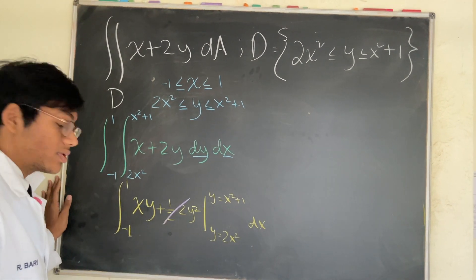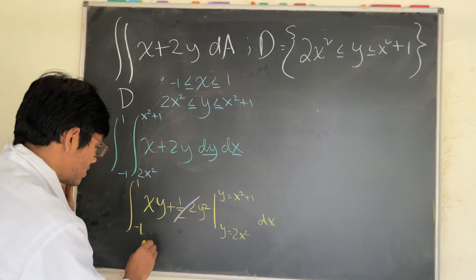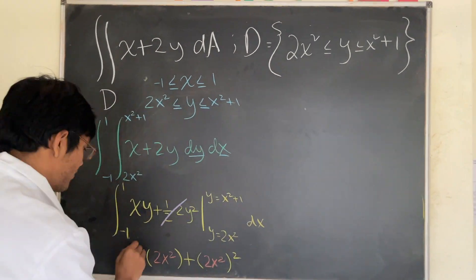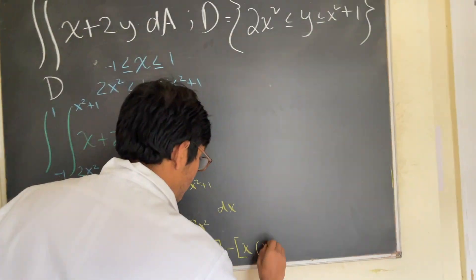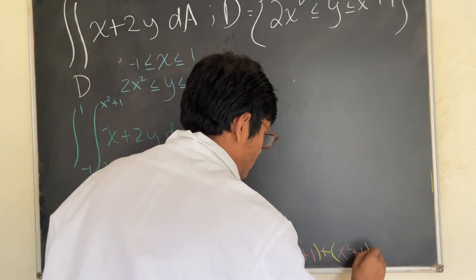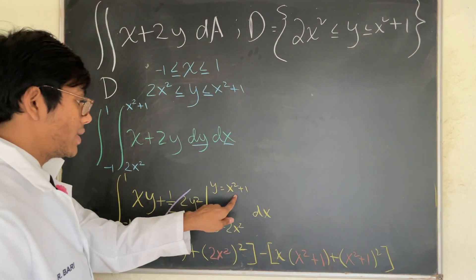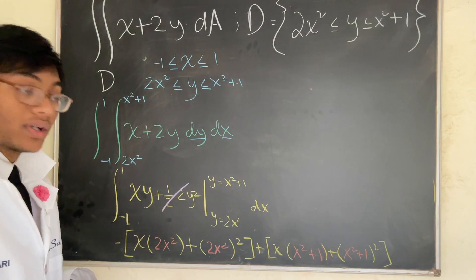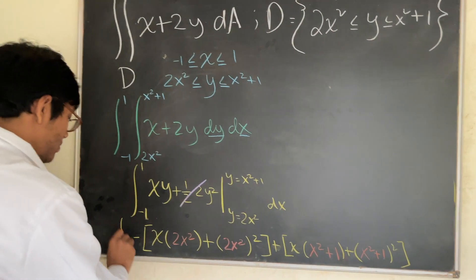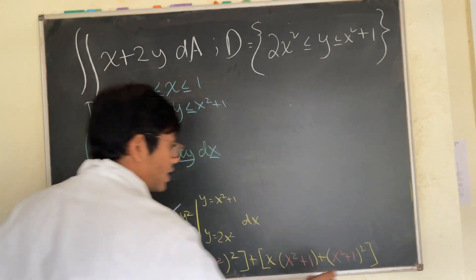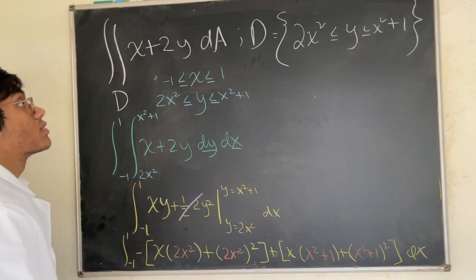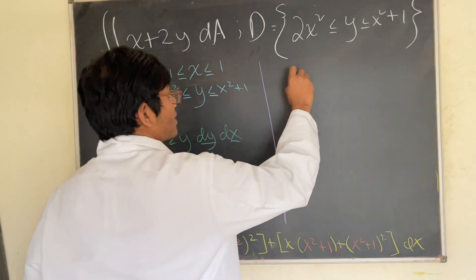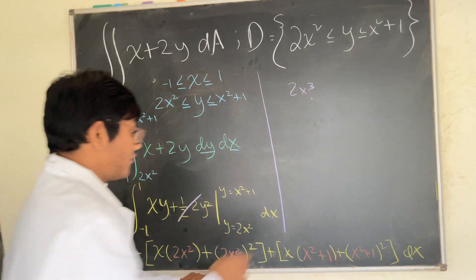Let's use purple here: the half and 2 cancel out, leaving us with xy plus y squared. Now we substitute the two y-values. We plug in x squared plus 1 first, then subtract the expression with 2x squared. On the right-hand side: x times 2x squared gives 2x cubed, plus (2x squared) squared gives 4x to the fourth.